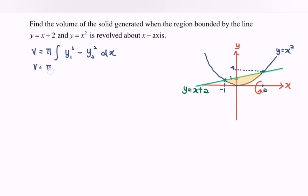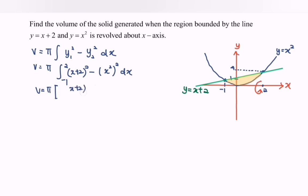Since we integrate with respect to x, V = π times the integral from −1 to 2 of [(x + 2)² − (x²)²] dx. Integrating gives V = π times [(x + 2)³ / 3 minus x⁵ / 5] evaluated from −1 to 2.